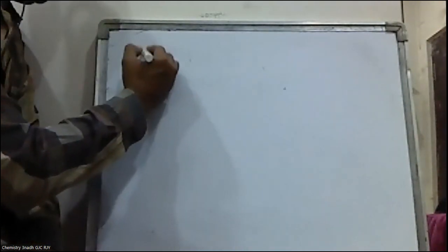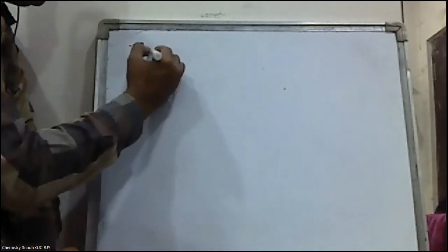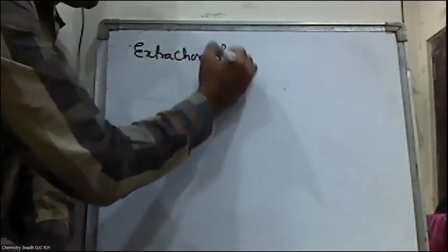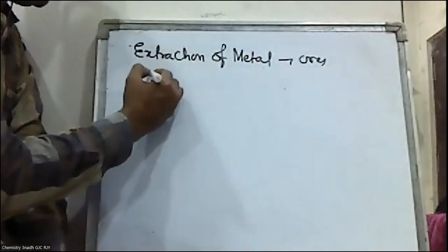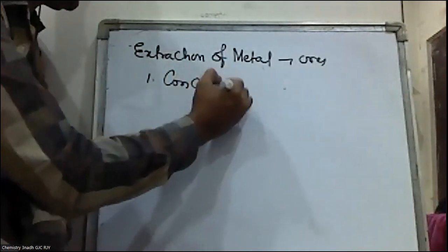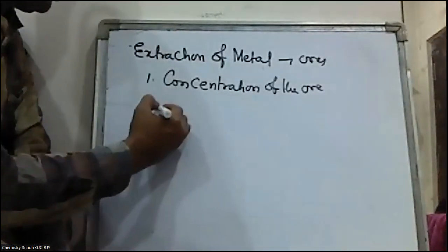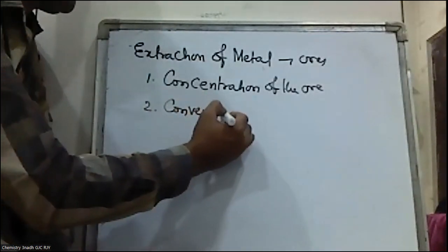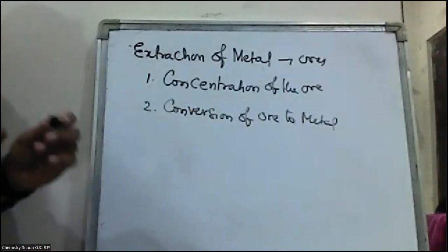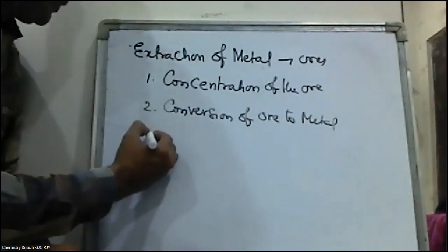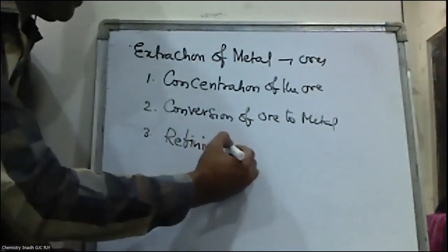We know that any metallurgical process — that is, extraction of metals from their ores — involves three steps. One is concentration of the ore, that is dressing of the ore. Second one is conversion of ore to metal, by means of reduction or by any other method. Third one is refining of metals.